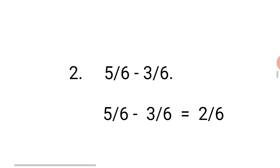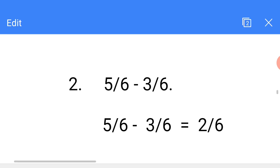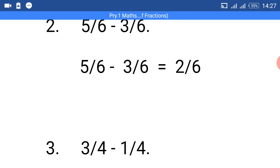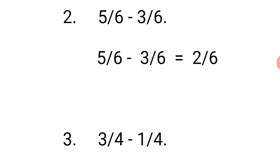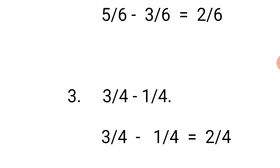Let's count 5: 1, 2, 3, 4, 5. Let's take away 3: 1, 2, 3. Let's count the remaining: 1, 2. Our answer equals 2. So 5 minus 3 equals 2. Then we pick one denominator out of the two denominators we are given. The denominators we have here are both 6, so we are going to pick just one 6. Our answer equals 2 over 6.